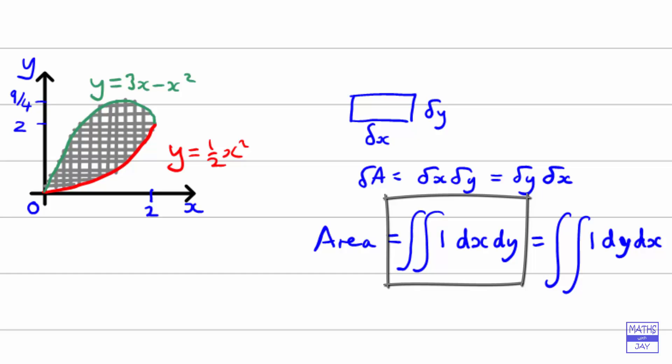So we're going to be first of all integrating with respect to x, looking at a horizontal strip and then integrating with respect to y. Now there are two reasons why this is more tricky than the other method. Looking at our diagram, firstly, if we're using a horizontal strip, once we get above the line y equals 2, we're not going from one curve to the other. Below y equals 2 we start on the green curve and end on the red curve, but above y equals 2 we start on y equals 3x minus x squared and end back on it again.